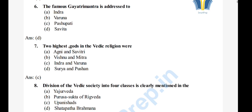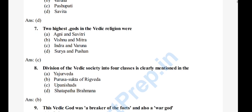Question 8: Division of the Vedic society into four classes is clearly mentioned in — A) Yajurveda, B) Purusha Sukta of Rigveda, C) Upanishads, D) Shatapatha Brahmana. The right answer is option B, Purusha Sukta of the Rigveda.